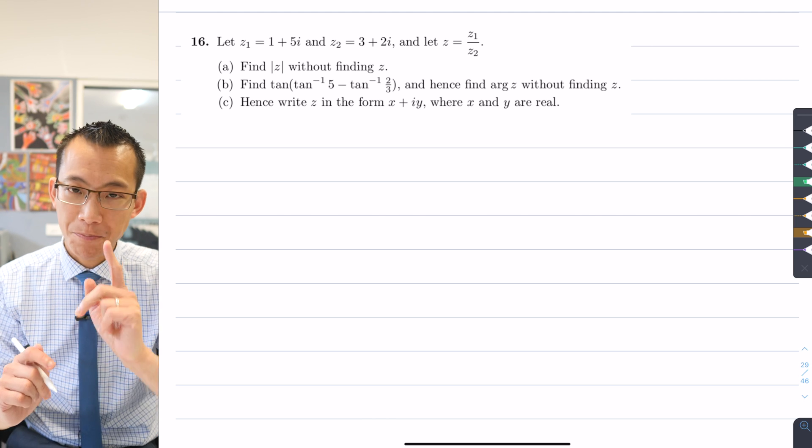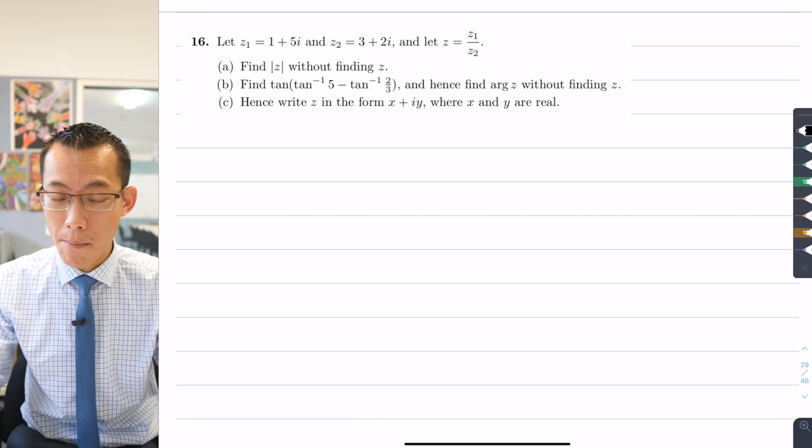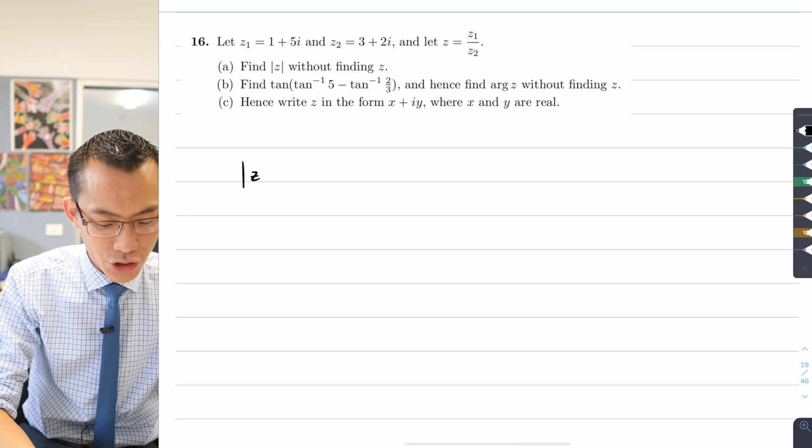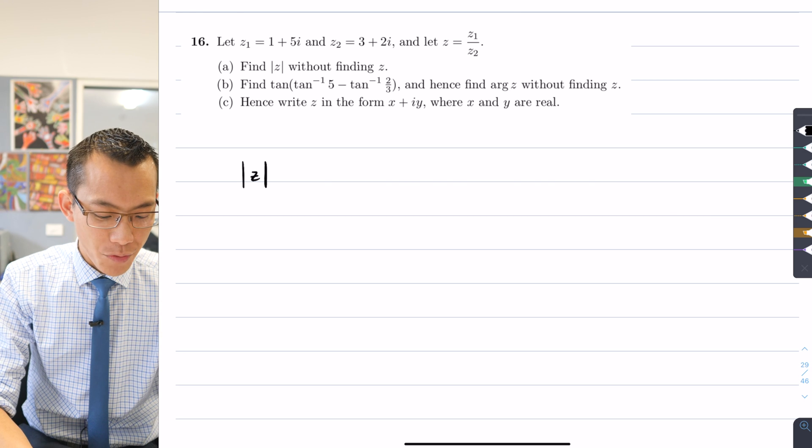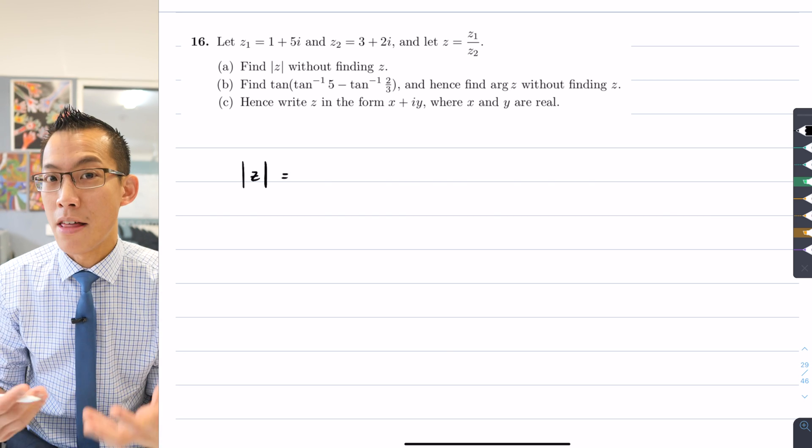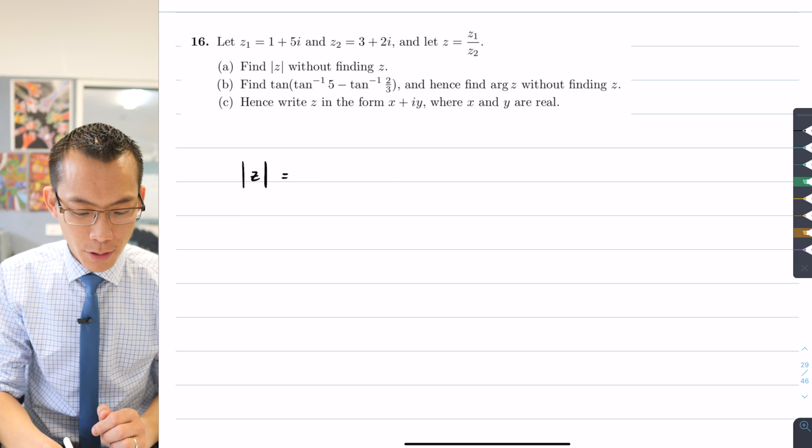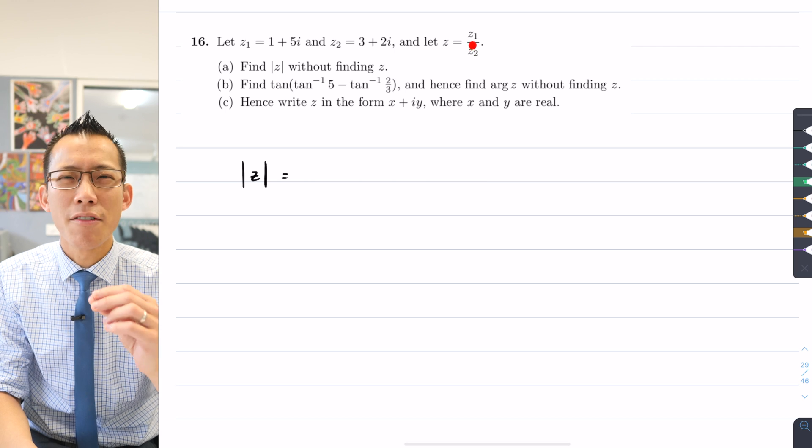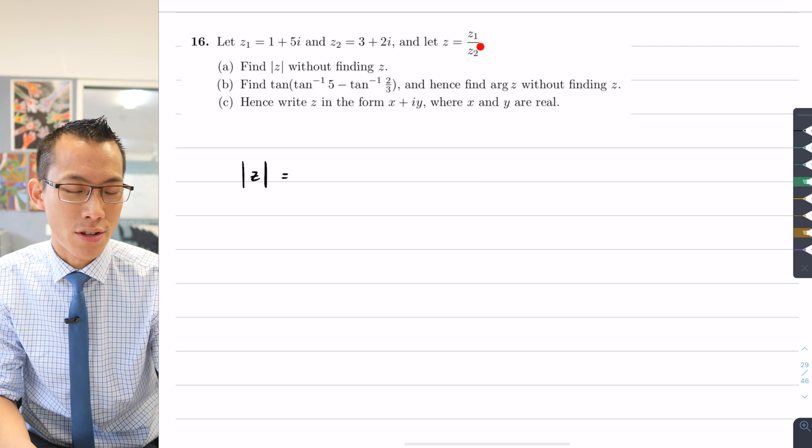So how do we go about this? What we need to remember is that when you are taking the modulus of something which is a quotient, when we multiply complex numbers we multiply the moduli. Here I'm not multiplying, I'm dividing, so instead of multiplying the moduli we will divide the moduli.